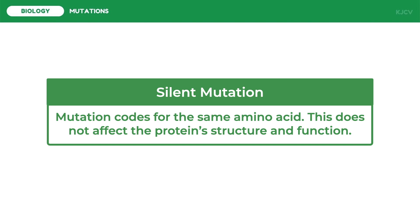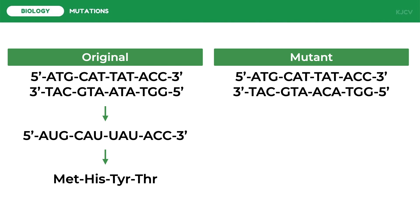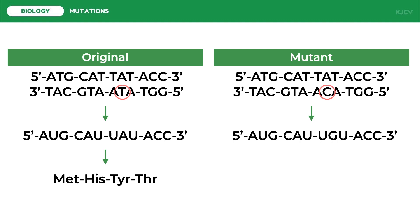Now let us look at the next effect of point mutations. Using the same DNA strand, we look at a mutation in which the thymine of the third codon of the 3' to 5' strand undergoes transition — the pyrimidine thymine is replaced by cytosine, another pyrimidine. After using the mutant template strand, the mutant mRNA strand differs from the original in the third codon: instead of UAU it has UGU. Translating this product gives methionine-histidine-cysteine-threonine — the third amino acid changed from tyrosine to cysteine. Substitutions that change one amino acid to another are called missense mutations.